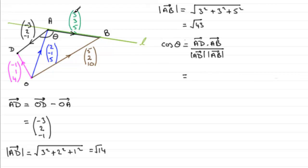In other words, we've got minus 3 times 3, so just show the working, minus 3 times 3, plus 2 times 3, and finally plus minus 1 times 5. And all of this is divided then by the magnitude of the two vectors AD and AB. And we've got those magnitudes here, root 14 and root 43, so root 14 multiplied by the square root of 43.